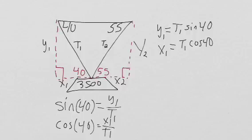I'm not going to go through it. A similar method over here will give us Y2 and X2. We get Y2 equals T2 sine 55 and X2 equals T2 cosine 55.